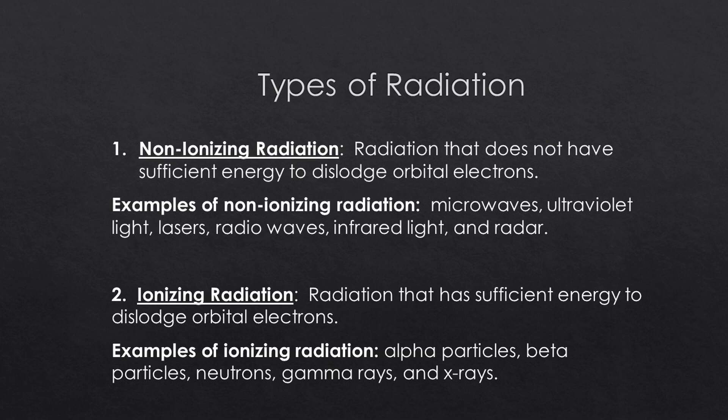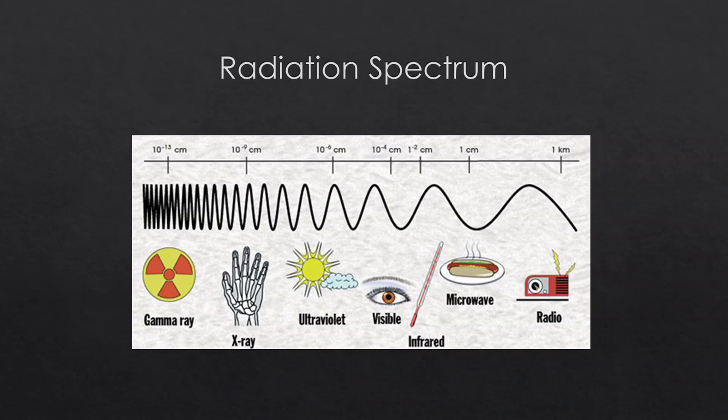The radiation spectrum is quite broad — it goes all the way from high-energy gamma rays to low-energy radio waves, with visible light sitting just about right in the center.